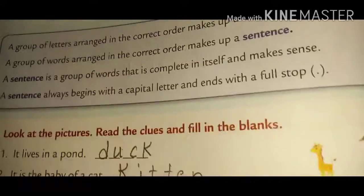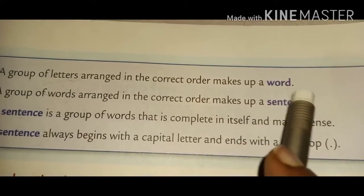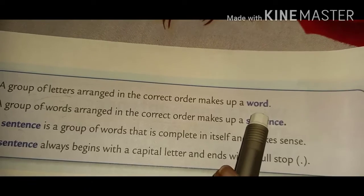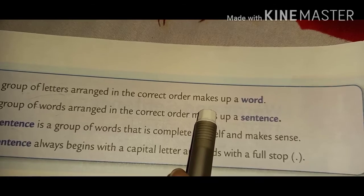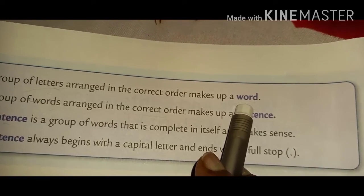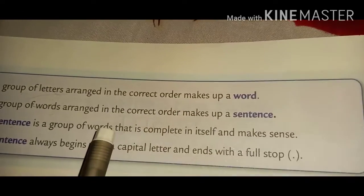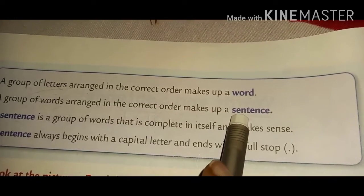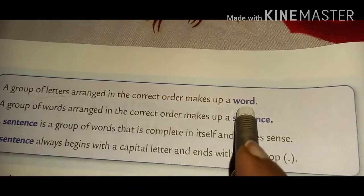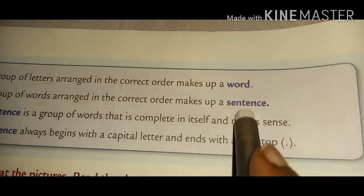Turn the page, children. Now you can see some definitions over here. A group of letters arranged in the correct order makes up a word. Letters ka jo group hota hai, jo arrange kiya hota hai correct order mein, voh banta hai ek word. Letters ke group correct order mein hon, unhe words kehte hain. Aur words ke group correct order mein hon, unhe hum sentence kehte hain. So letters are important in words, and words in correct order are very important in a sentence.